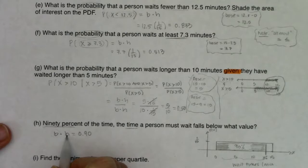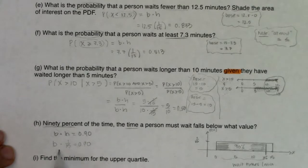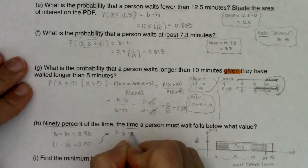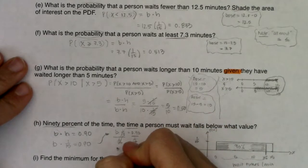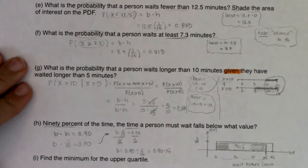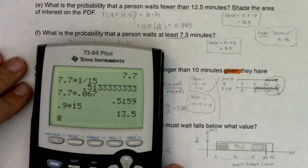I know base times 1/15 equals 0.90. To solve for base, multiply both sides by 15 — dividing by 1/15 is the same as multiplying by 15. So base equals 0.90 times 15, which gives 13.5 minutes. So 90% of folks are waiting 13 and a half minutes or less to take this bus.